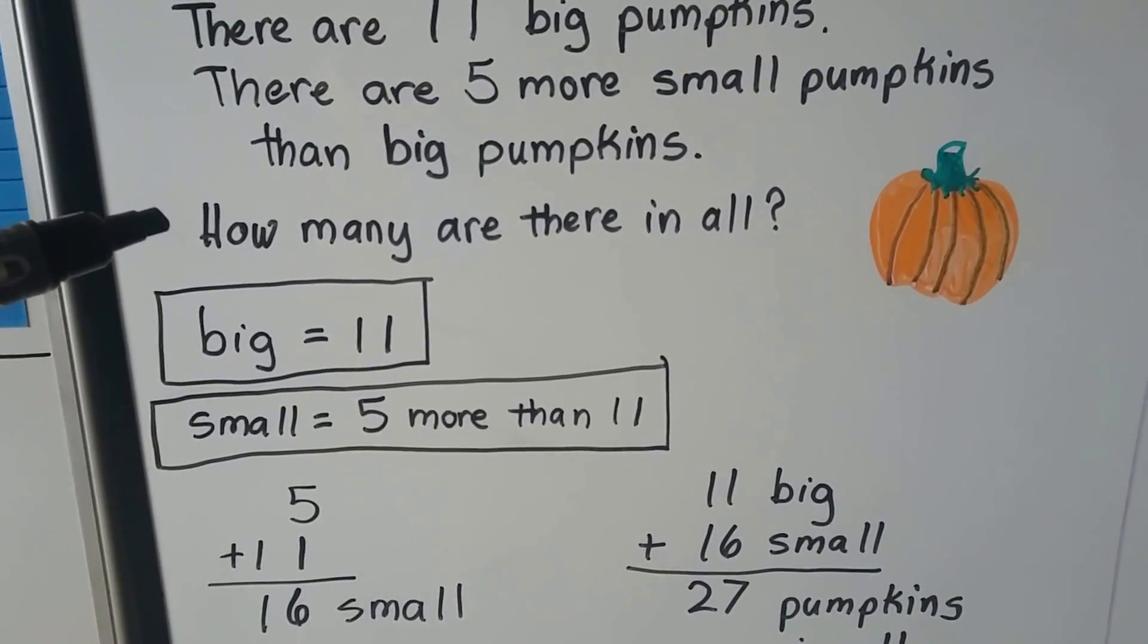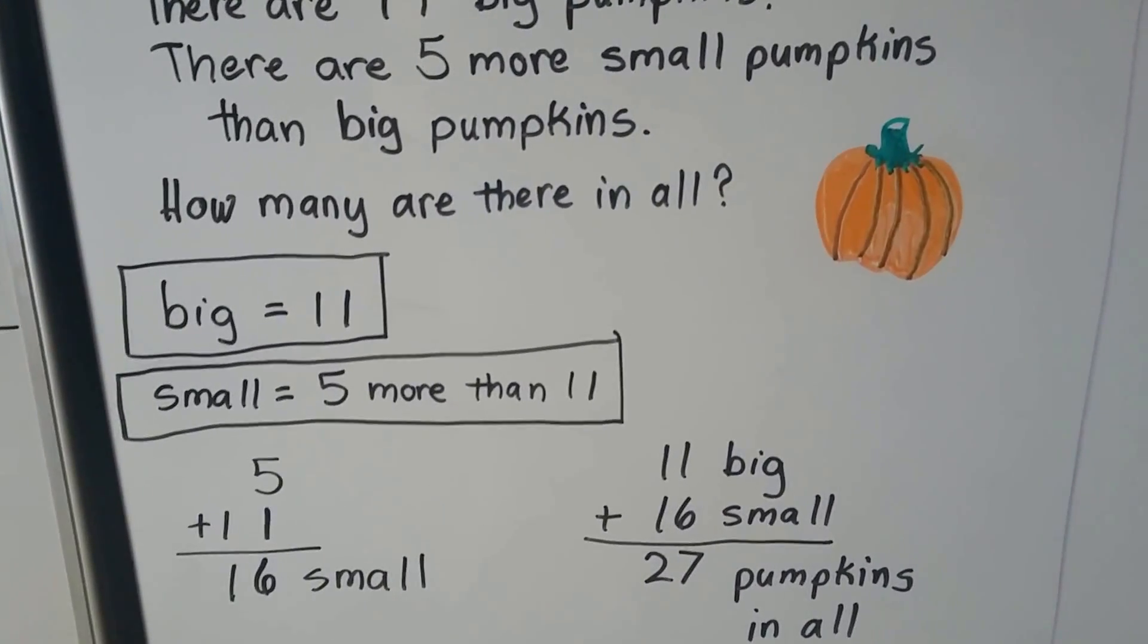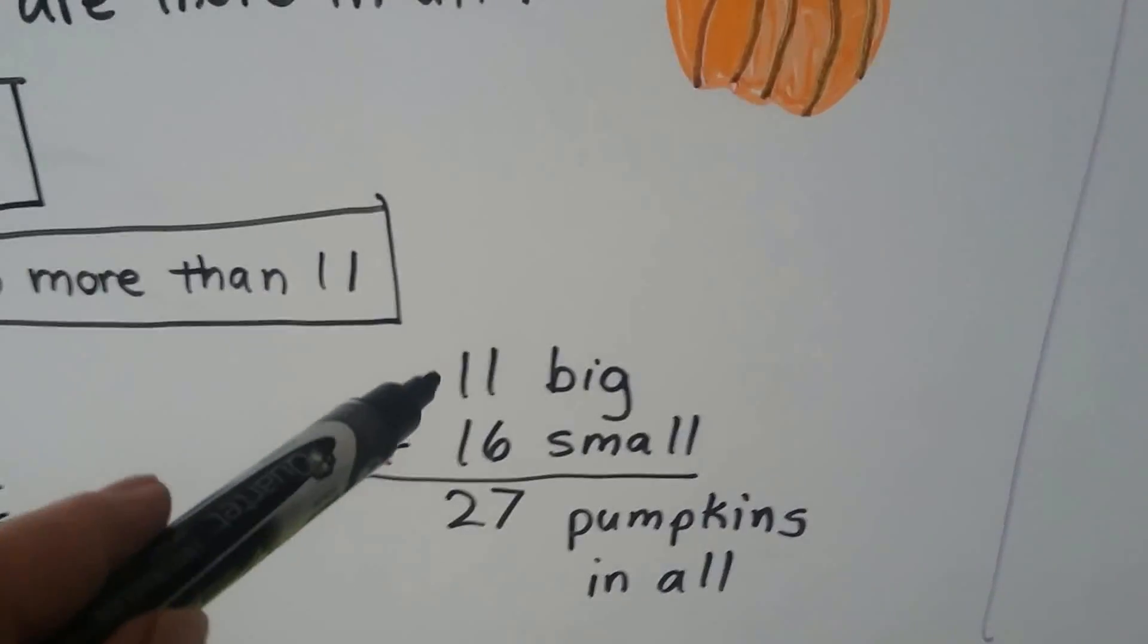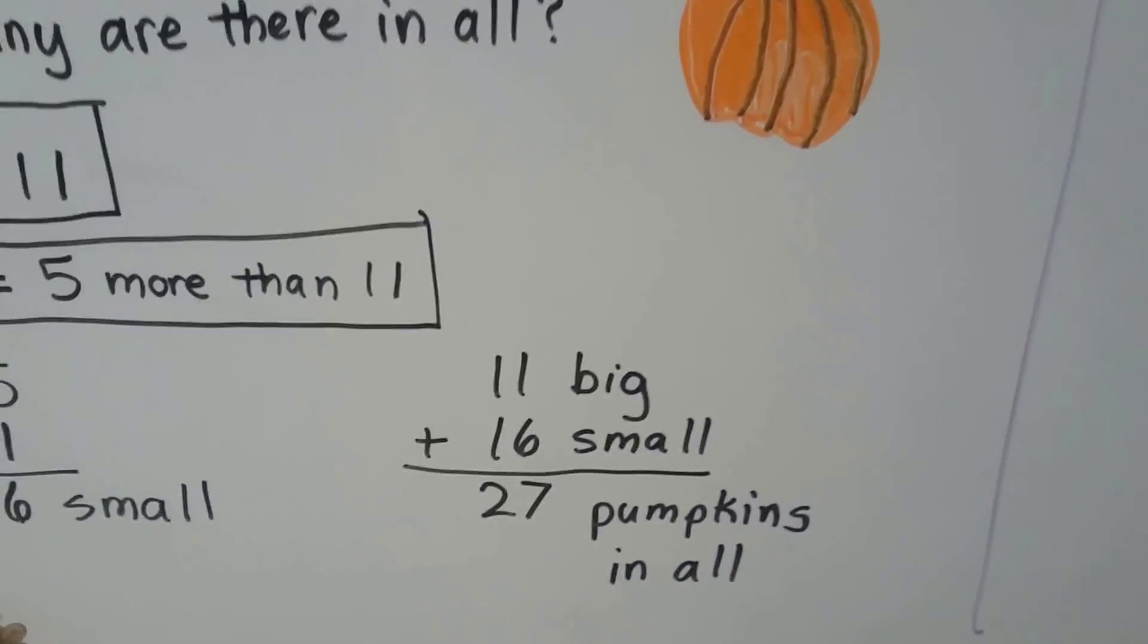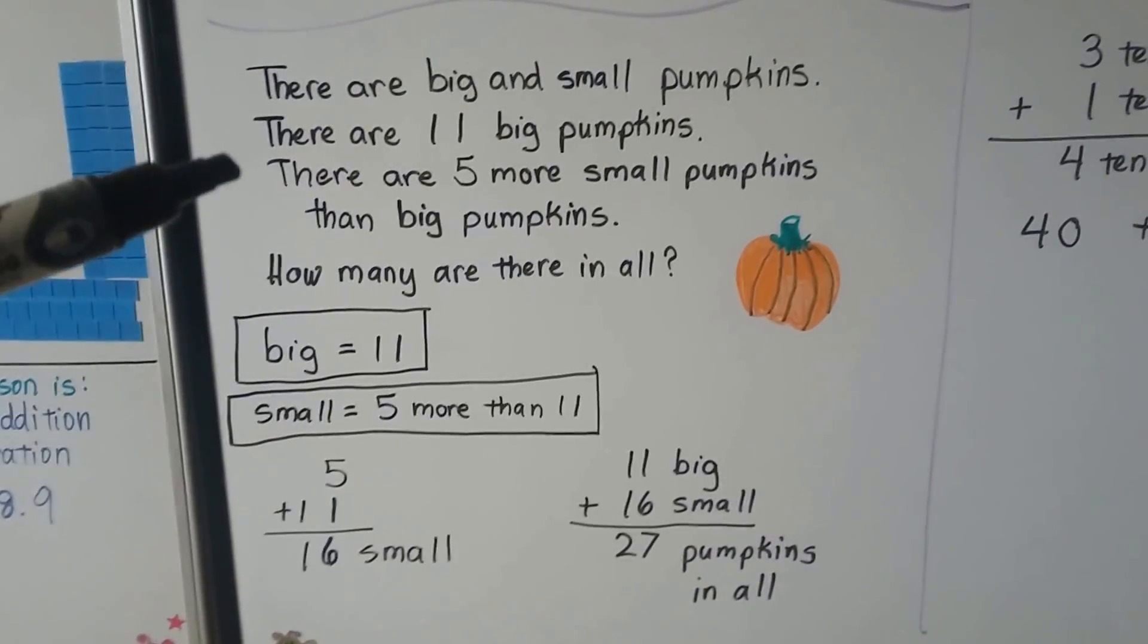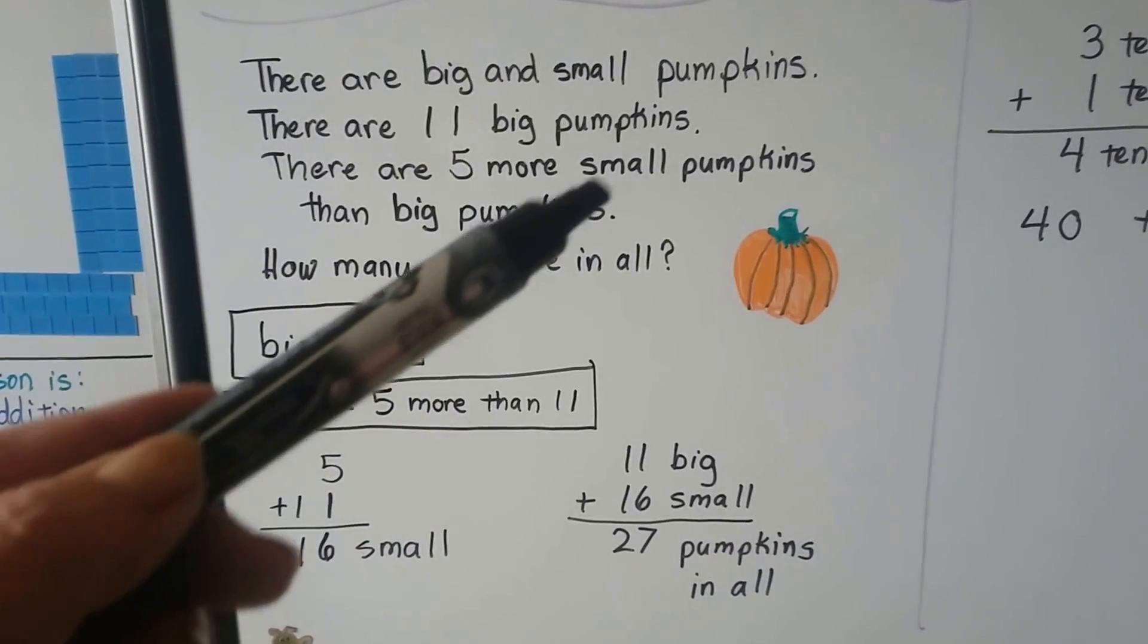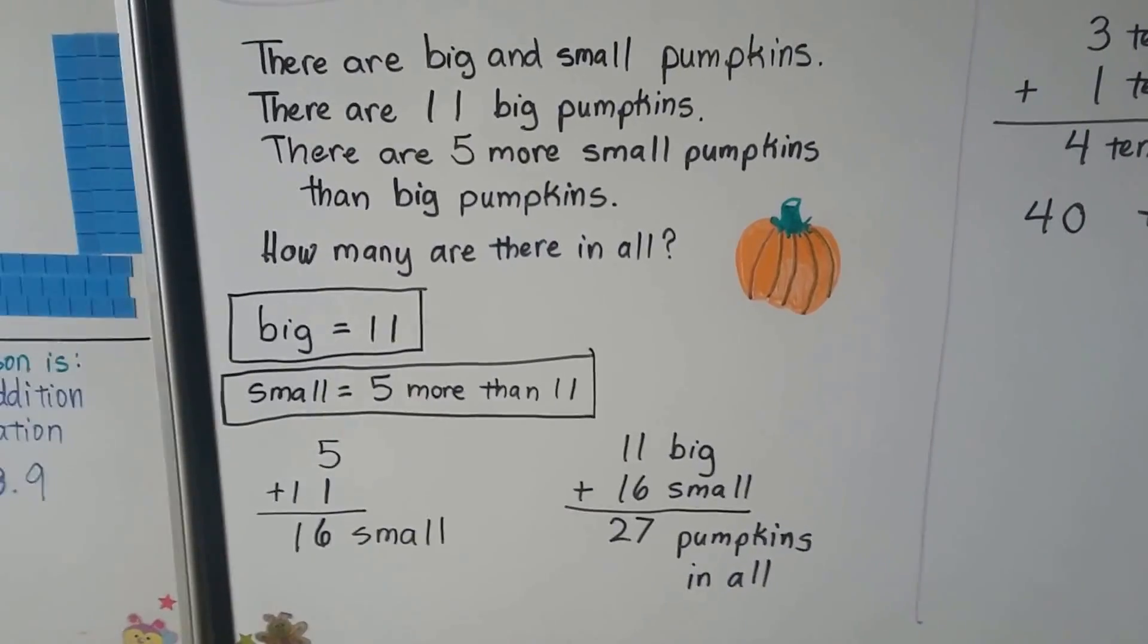It wants to know how many there are in all. We need to add the eleven big ones and the sixteen small ones. Eleven plus sixteen. We add the numbers in the ones place. The one and the six. That makes seven ones. We add the numbers in the tens place. One plus one is equal to two. That means there's twenty-seven pumpkins in all. So do you see how I did that? It said there are five more small ones than big ones. So we had to look at the number of big ones and add five more to it to find how many small ones there were. Then we added the amount of small ones to the eleven big ones.